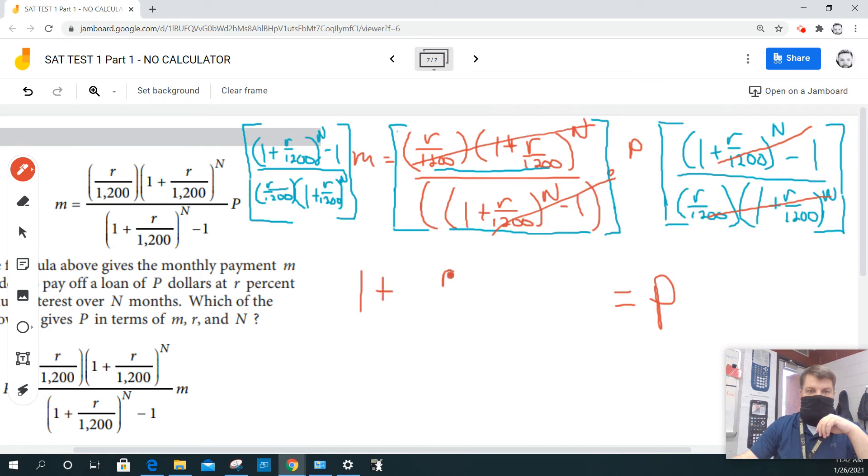1 plus R all over 1,200 raised to the N minus 1, over R over 1,200, times the quantity 1 plus R over 1,200 raised to the N, times M.